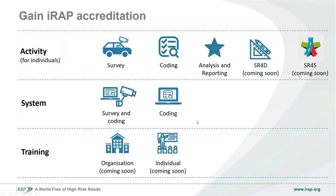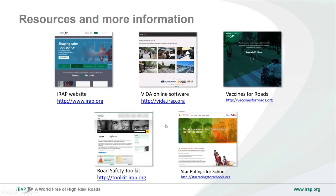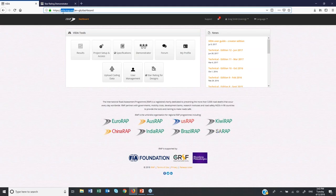There are lots of resources and information available — five key websites — and I encourage you to explore each of them. There's lots of materials there. If you don't find what you're looking for, you can always get in touch. What I want to do right now is jump into our online software, which is called VIDA, and introduce you to the Star Rating Demonstrator.